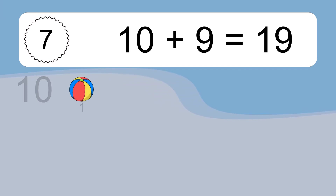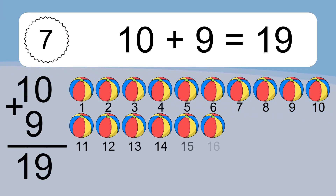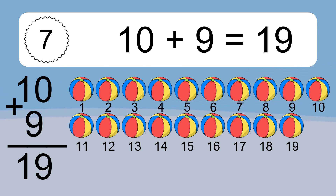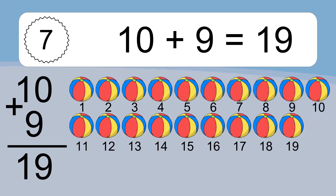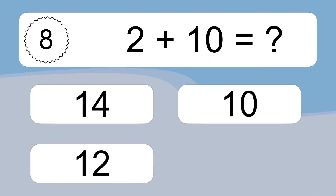10 plus 9 equals what? 10 plus 9 equals 19. Let's count it. 1, 2, 3, 4, 5, 6, 7, 8, 9, 10, 11, 12, 13, 14, 15, 16, 17, 18, 19.